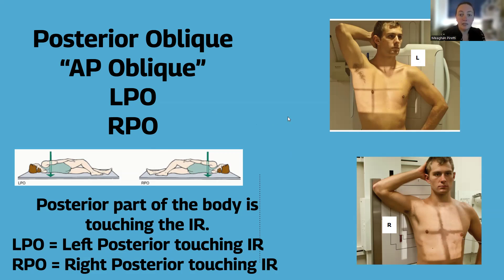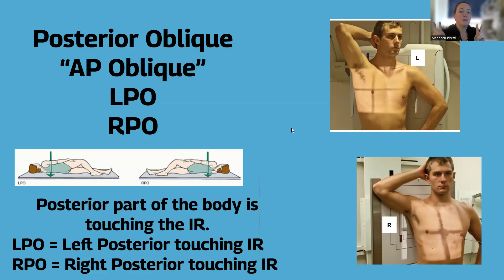These letters are the key, but watch out: posterior obliques mean the patient will be AP. Remember, AP is the path of the beam — entering anterior, exiting posterior — but the oblique is a posterior oblique because the posterior part of the body is touching the IR.